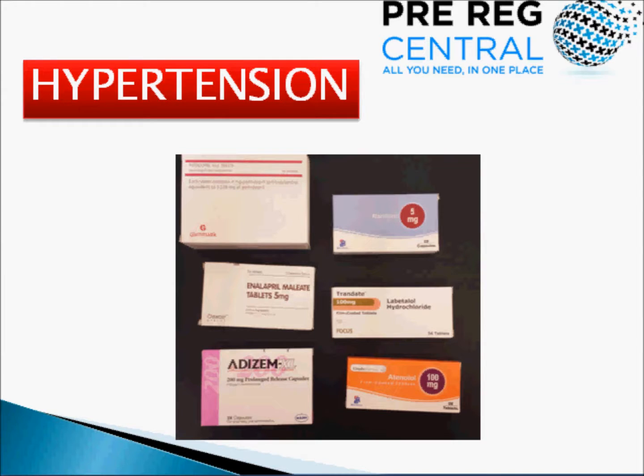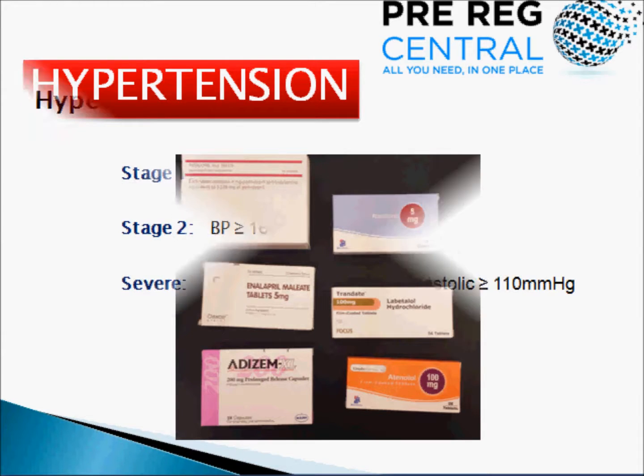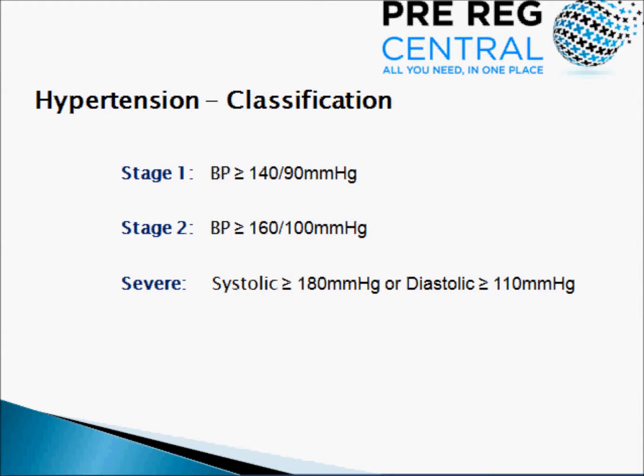As pre-ed students you need to be aware of the contributing factors which can increase a patient's risk for hypertension. Some of these factors include family history, obesity and age. Another key point is that it can be classified into various stages — for instance stage 1, stage 2, as well as severe hypertension. These can be seen from the slides.